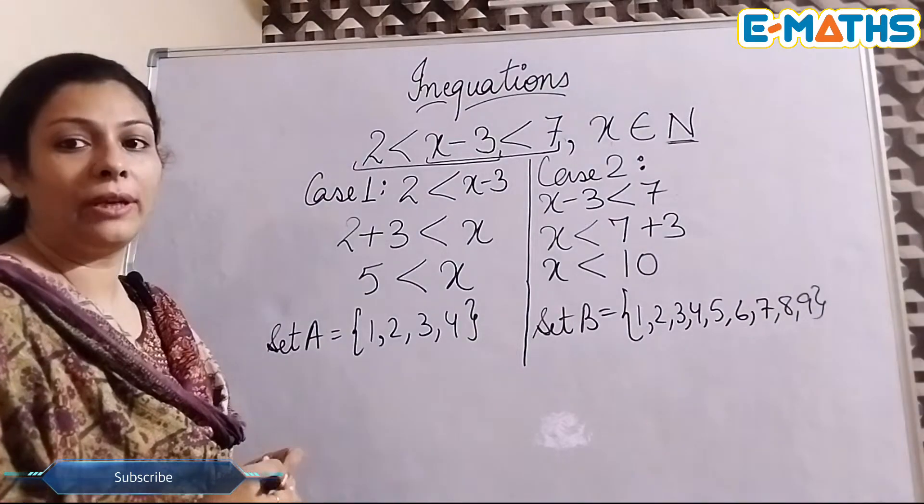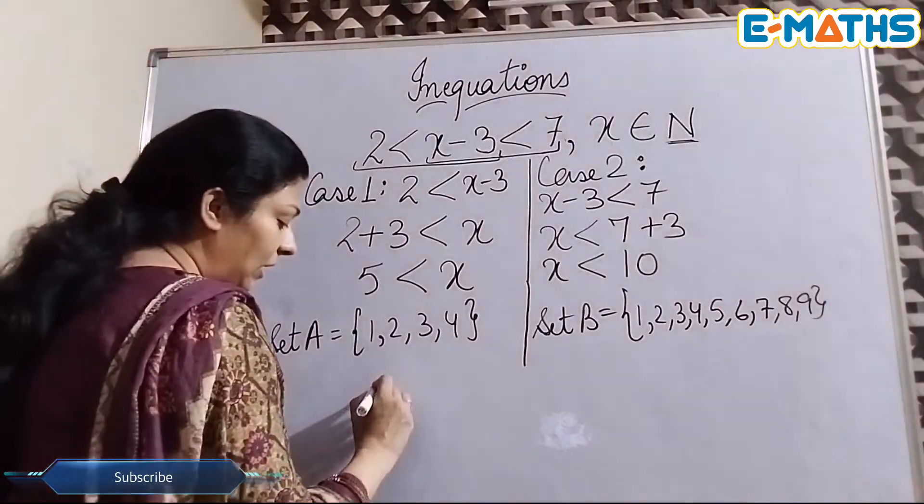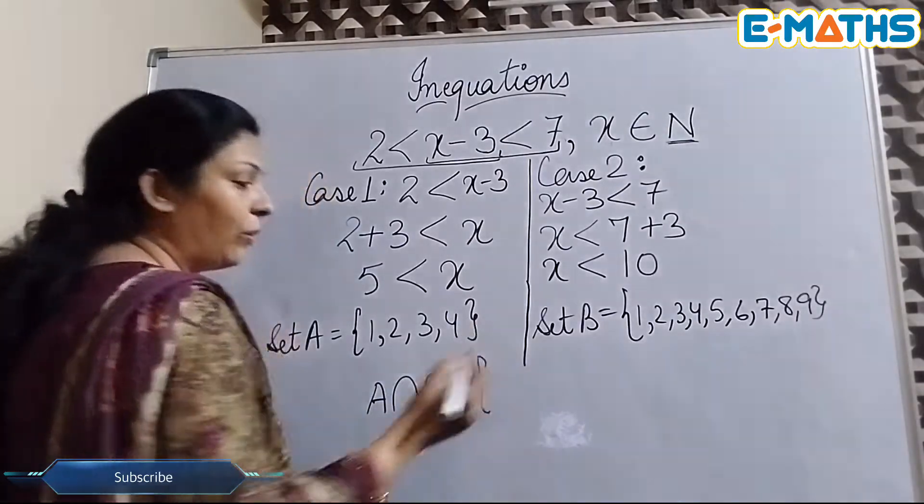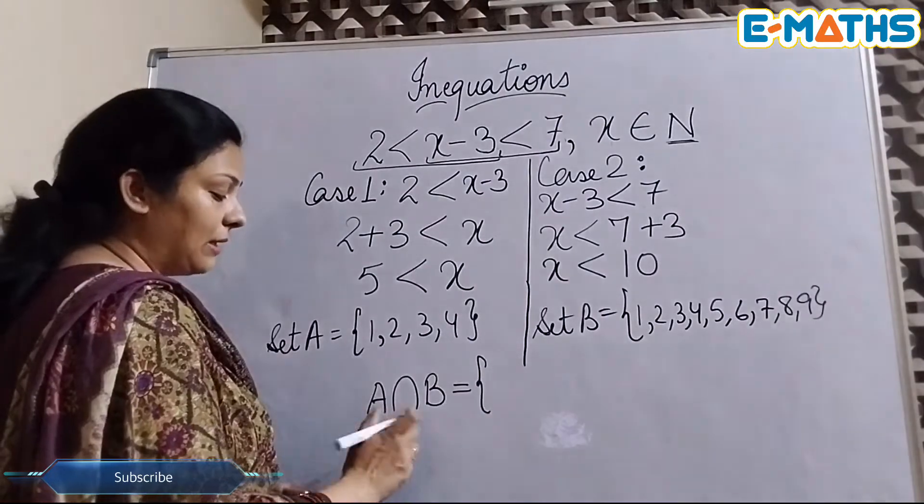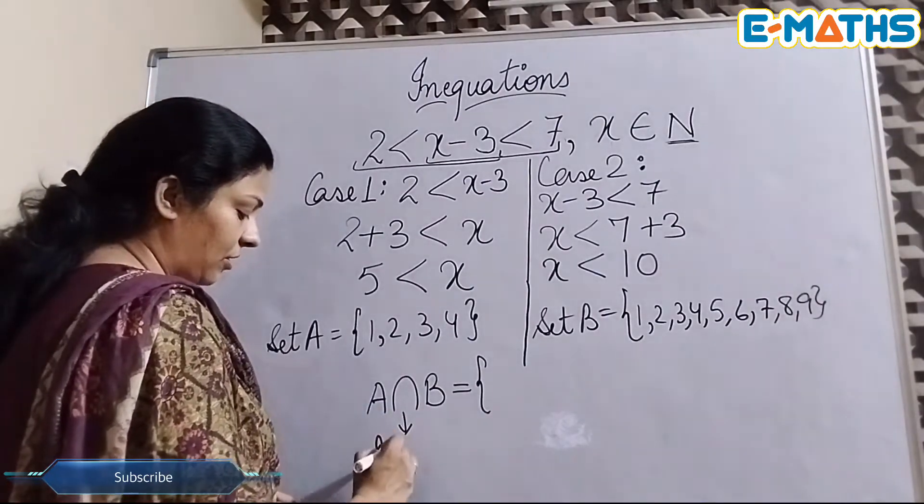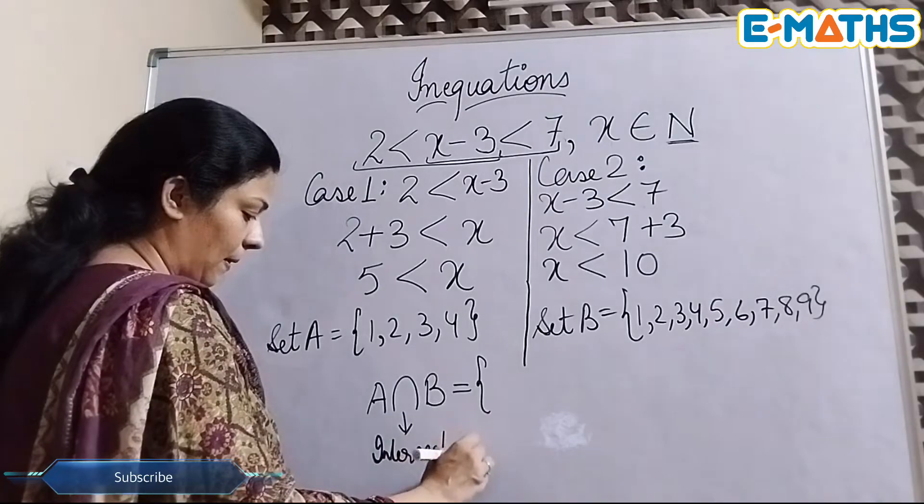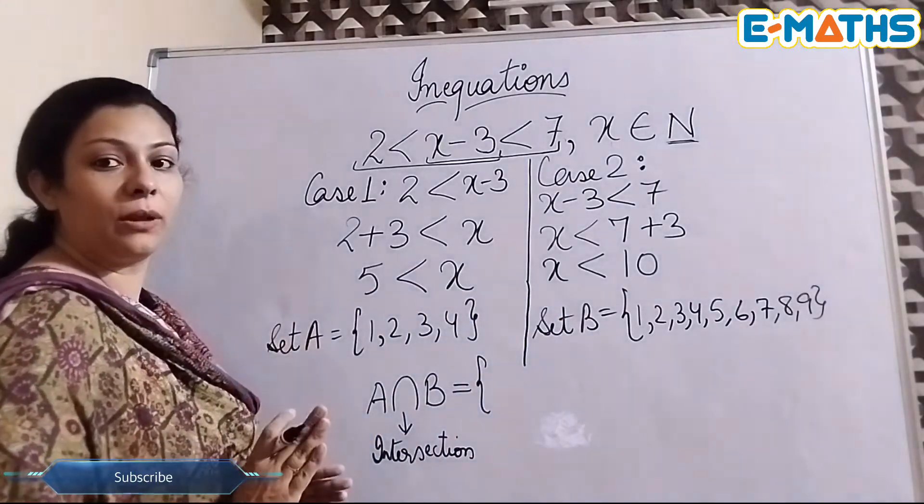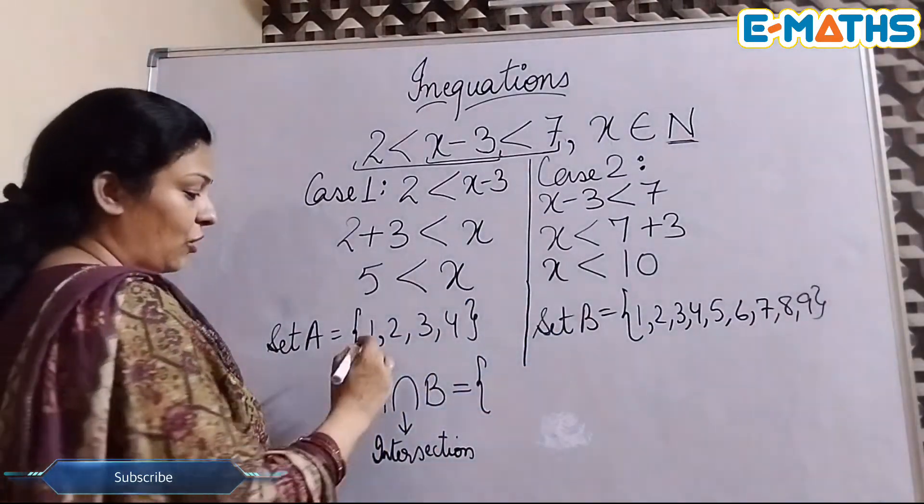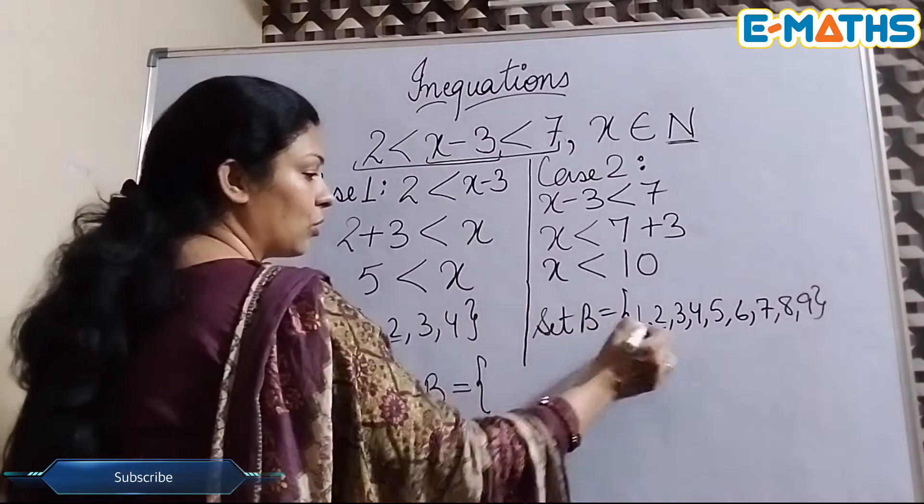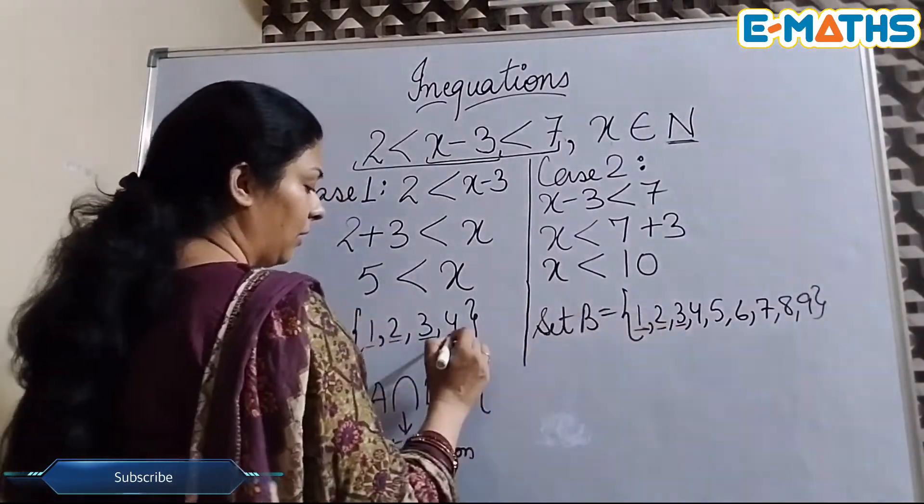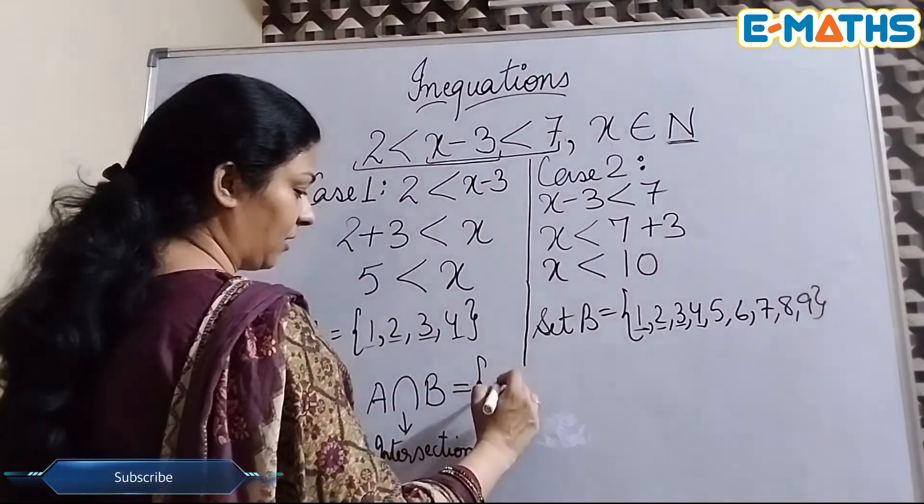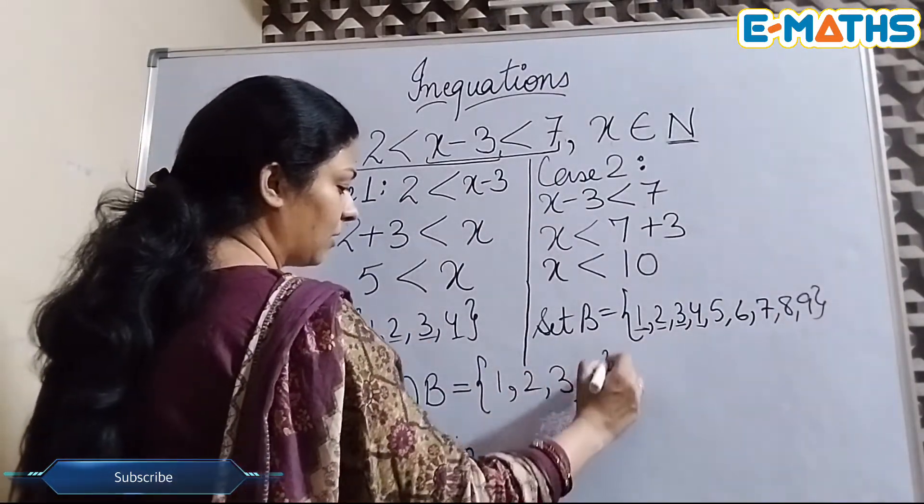Now the last part, which is again a very important step for solving such a question, we need to find the intersection. Now how do we find the intersection? This inverted U means intersection. In intersection we look at both the sets and the numbers that are common. Common means which comes in both the sets. So we have 1 here, we have 1 here as well, 2, 3, 4. So we have our intersection here as 1, 2, 3, and 4.